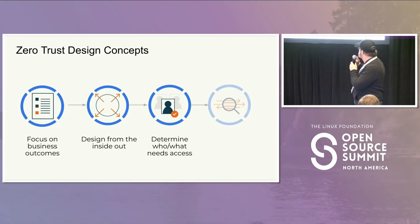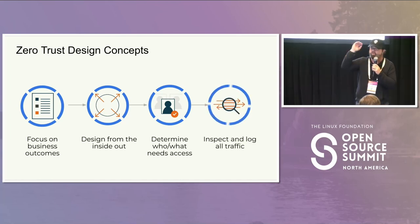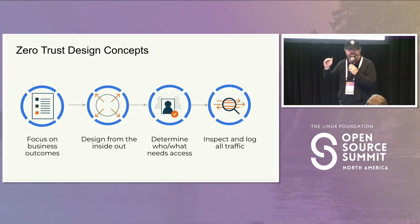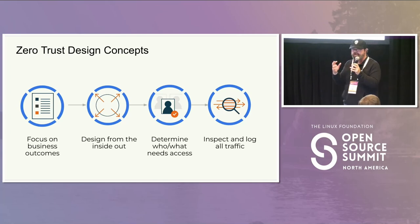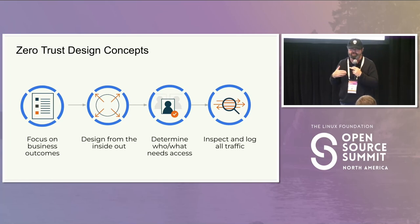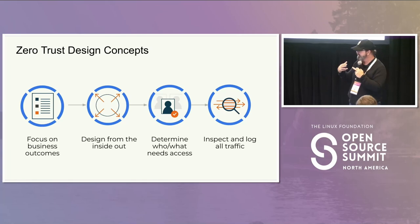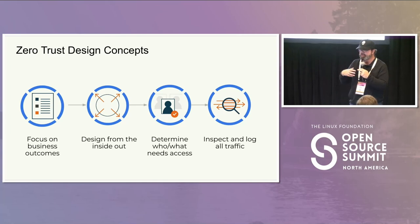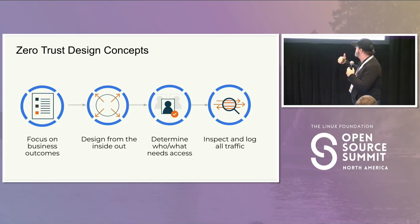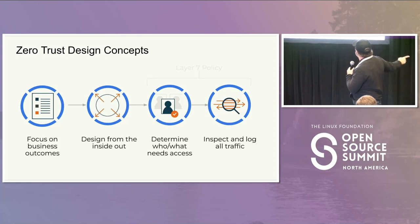The fourth design concept is that we inspect and log all traffic all the way up to layer seven. Why layer seven? Because that's where the attackers live. Many people don't realize what a step forward it was when we started getting layer seven visibility into what was happening. We do this so that we can instantiate zero trust as a policy.